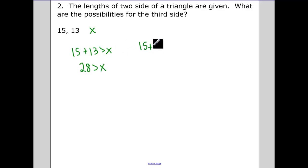Fifteen plus x has to be greater than thirteen. So x has to be greater than negative two. And thirteen plus our third side x has to be greater than fifteen, or x has to be greater than positive two. So I know for sure x is less than twenty-eight.